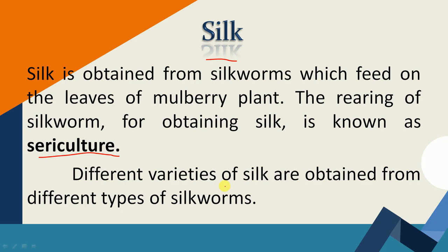Different varieties of silk are obtained from different types of silkworms. Silk की different varieties इसलिए होती हैं क्योंकि silkworm insect भी different types का होता है, इसलिए different types के silkworm से different types की silk मिलती है.